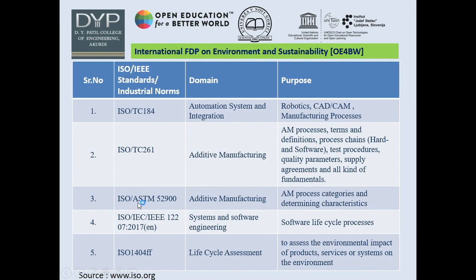The next standard is ISO/ASTM 52900, which also deals with additive manufacturing, process categories, and determining characteristics. Then there is ISO/IEC/IEEE 12207:2017, which deals with system and software engineering — specifically software lifecycle processes incorporated into advanced manufacturing. Finally, ISO 14040/14044 is used in lifecycle assessment format to assess the environmental impact of products, services, or systems on the environment.